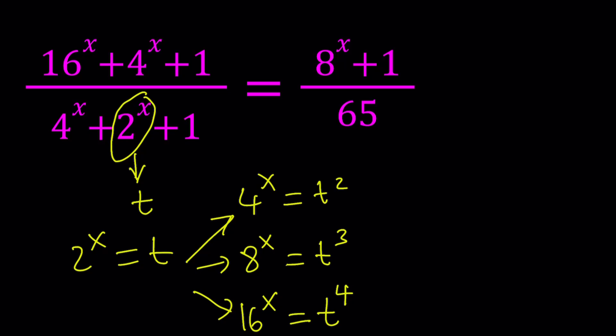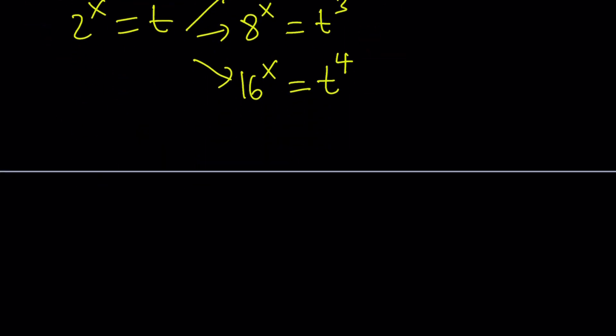Let's go ahead and make all the replacements and see what happens. So, 16 to the power x, we're going to replace with t to the fourth. 4 to the power x is going to be t squared plus 1. And at the bottom, we have 4 to the power x, which is t squared again, plus t plus 1. And this is equal to t cubed plus 1 divided by 65.